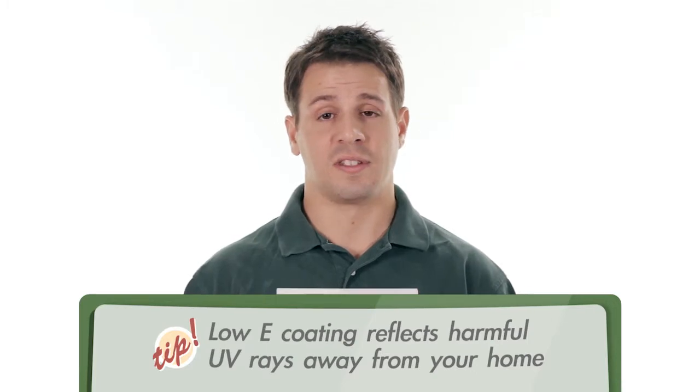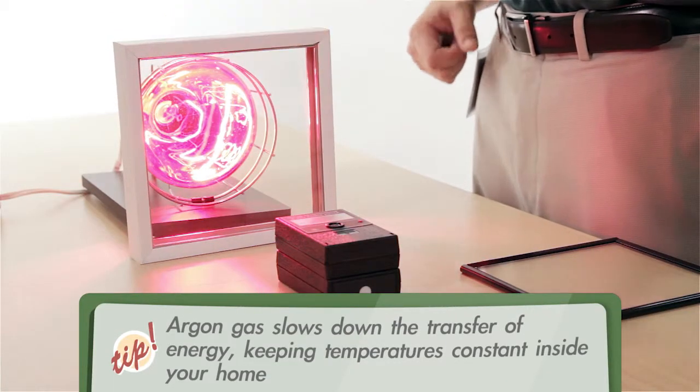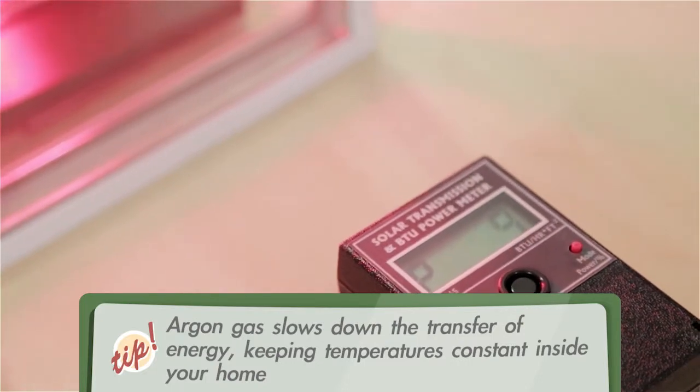The argon gas is designed to slow down energy transfer. If we set this in front of the meter, the meter reads 9%, which means 91% of the heat from this lamp is being blocked away from this double pane argon filled window.